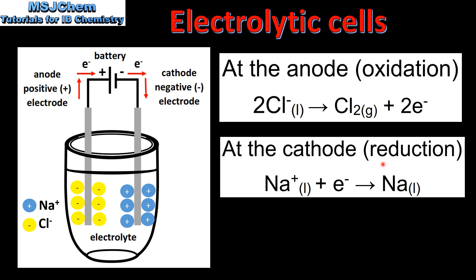At the cathode we have reduction. The positive sodium ions are attracted to the negative electrode where they are reduced to form sodium atoms.